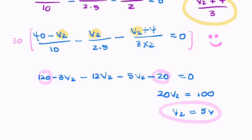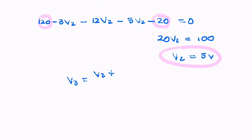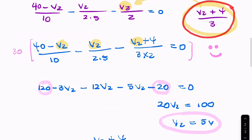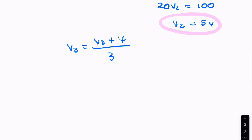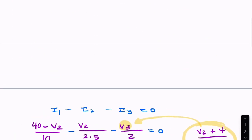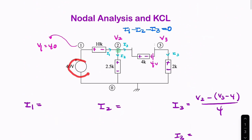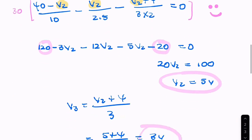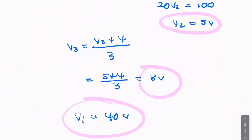So we've almost finished. Now, we know V2. We can find V3. We can say V3 is V2 plus 4 over 3. And that looks like it's 5 plus 4 over 3 equals 3 volts. And I think we already established V1 is 40 volts. That's sort of given in the diagram. So that's your final answer. We solved it using Kirchhoff's current law and nodal analysis with a source conversion.